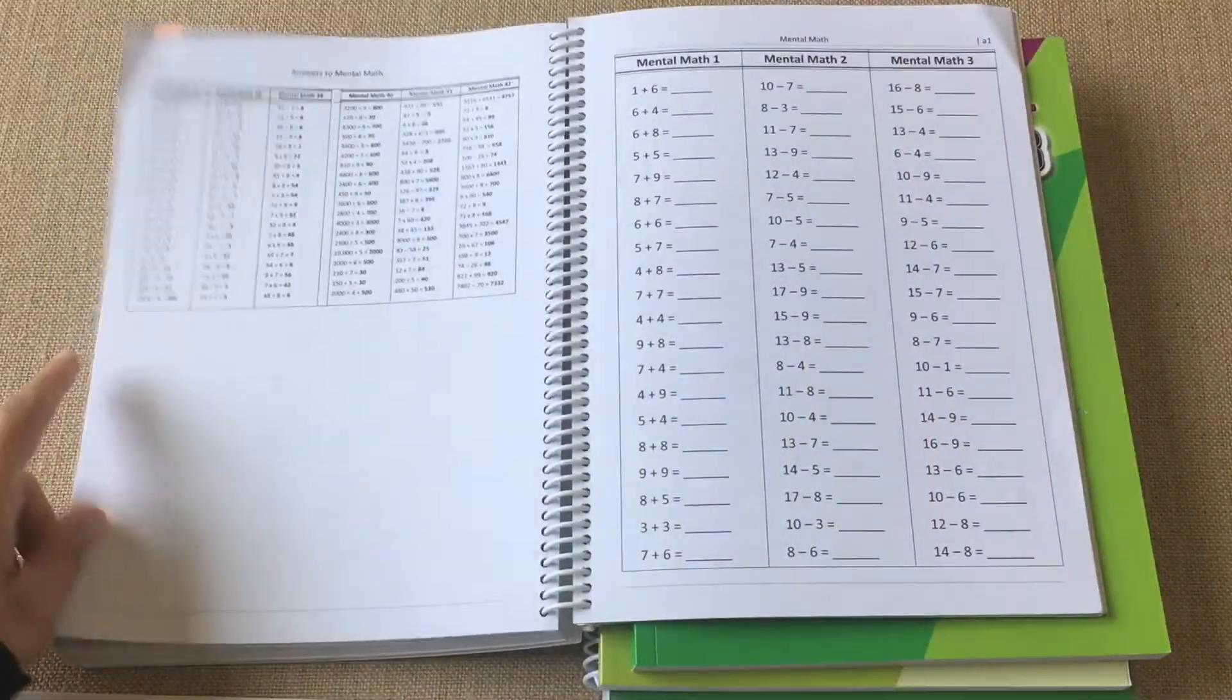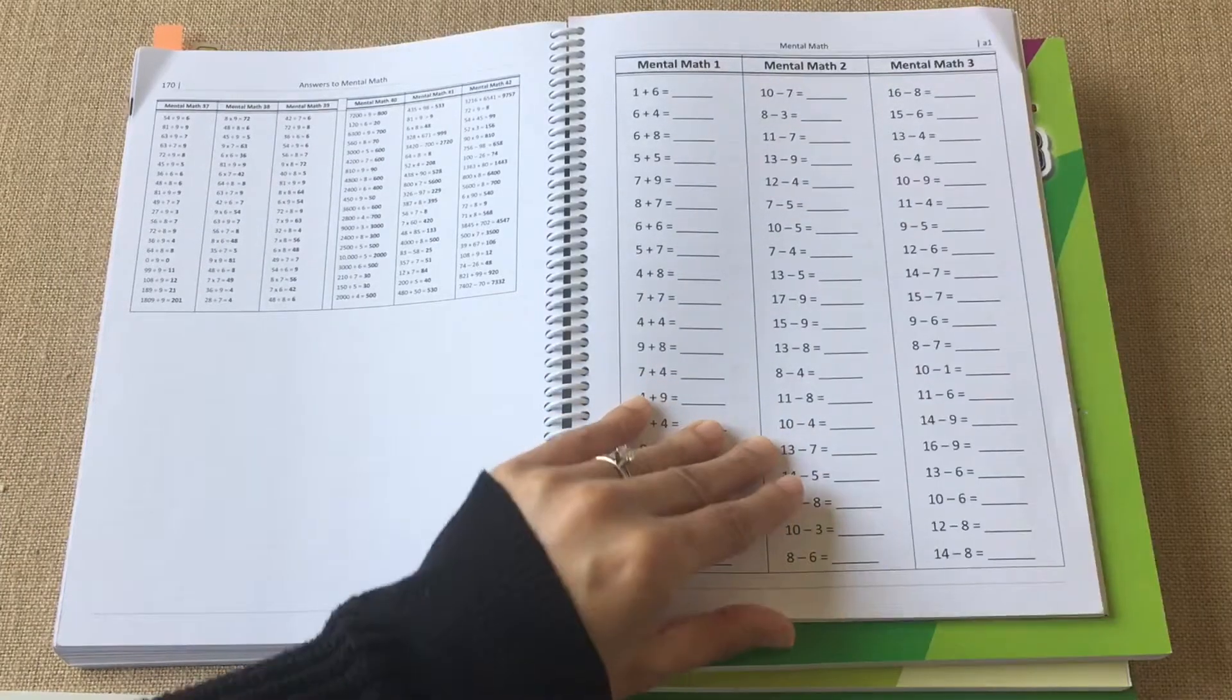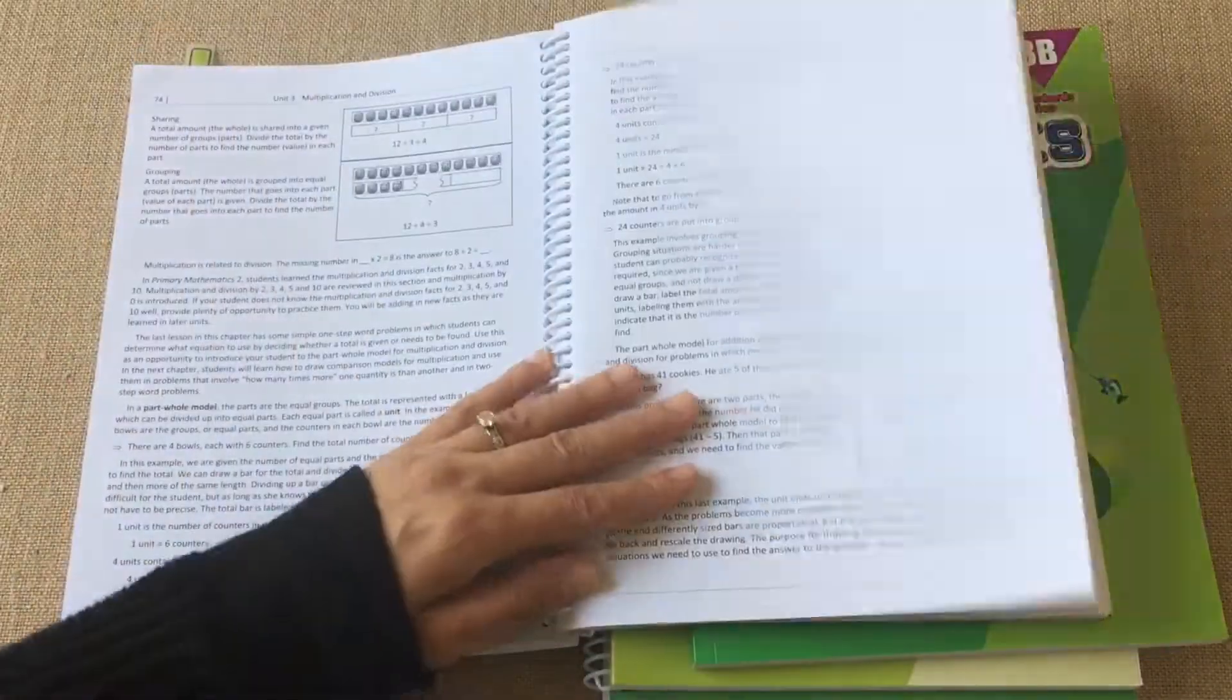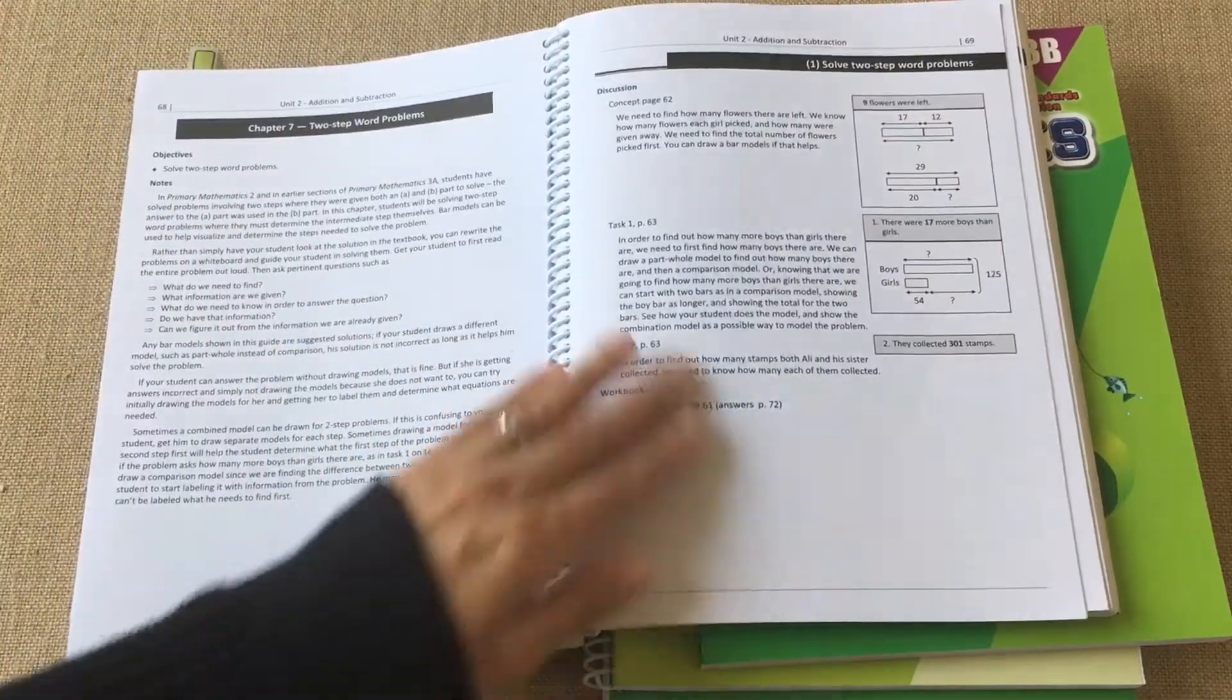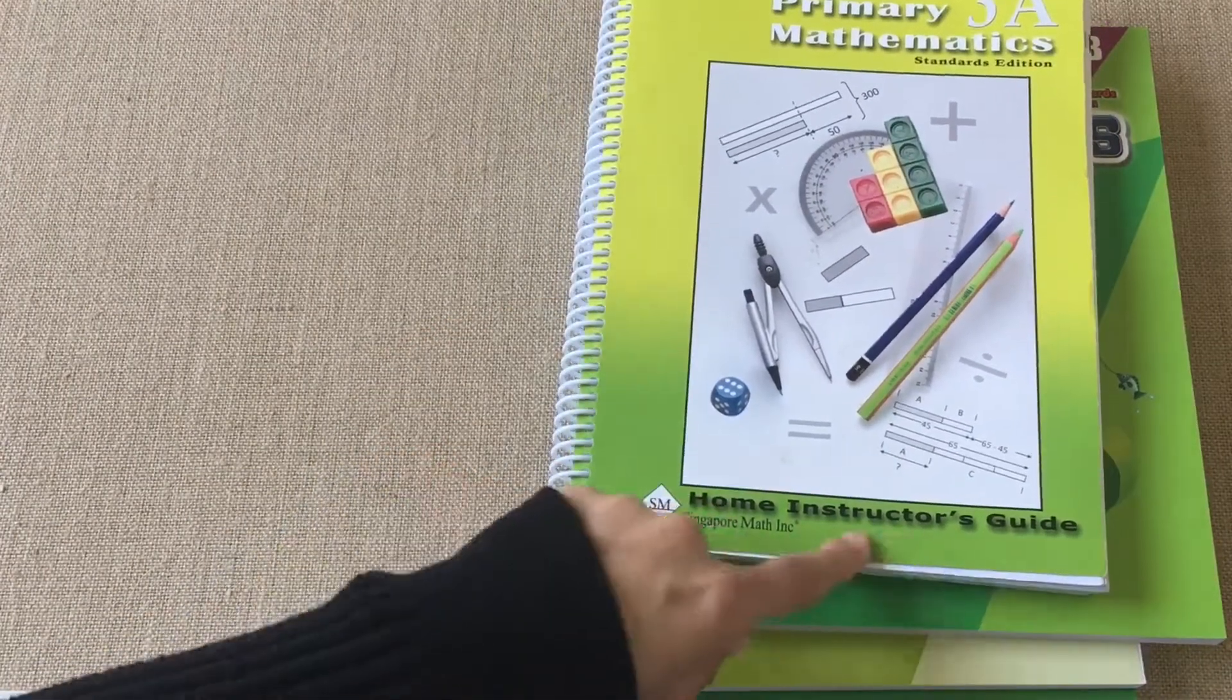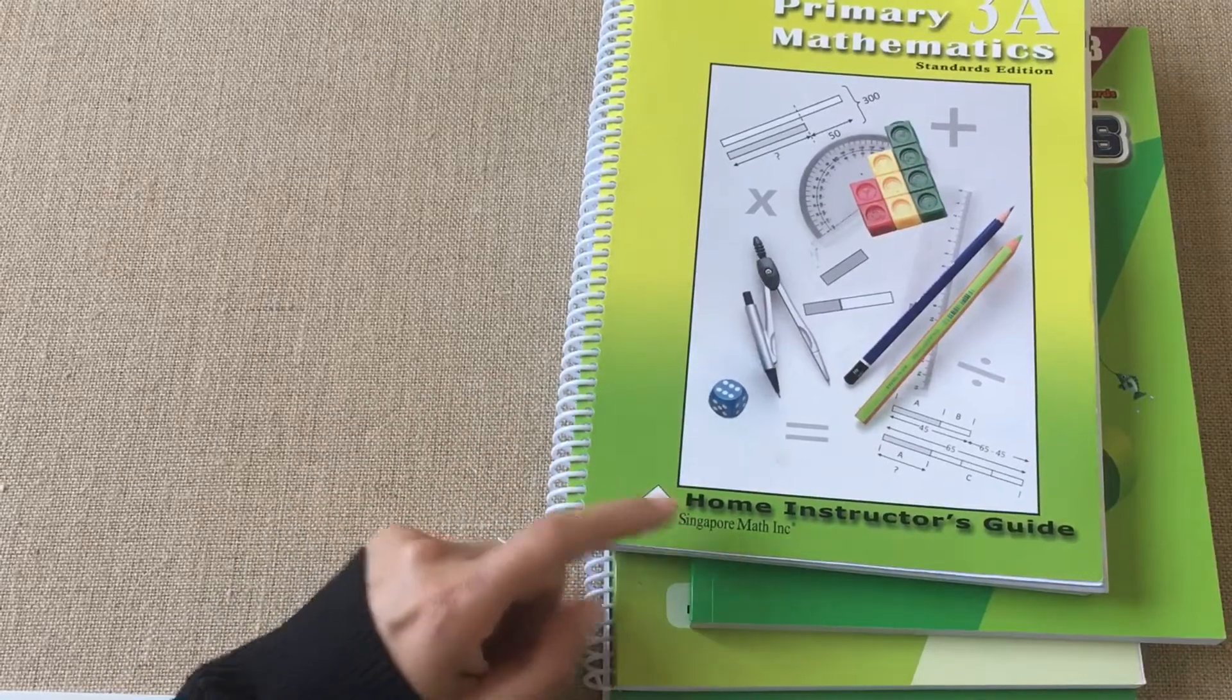It tells you how to use the teaching aids and hands-on materials to introduce a concept. At the end of the teaching manual is a section called Mental Math which gives you sheets to do drills with the child. There is a lot of emphasis on mental math, which I would say is important.